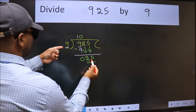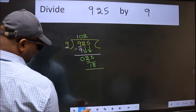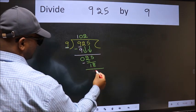A number close to 25 in 9 table is 9 times 2 is 18. Now we should subtract. We get 7.